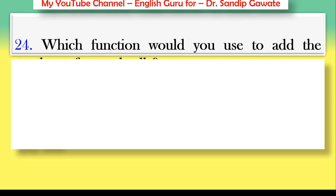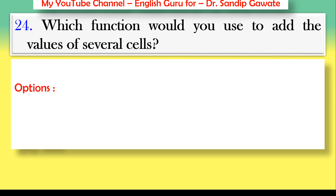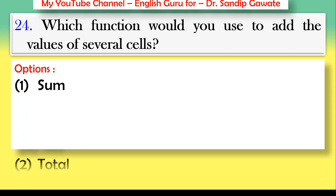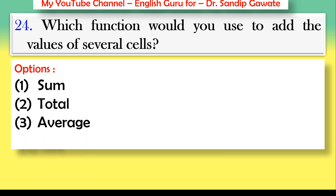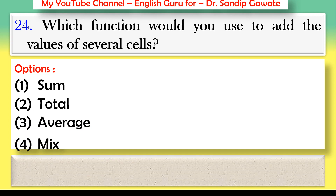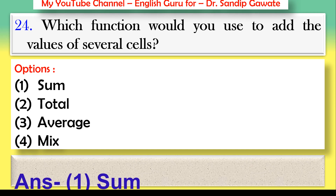Question 24: Which function would you use to add the values of several cells? Options: SUM, TOTAL, AVERAGE, or MIX. The correct answer is option number one — SUM.